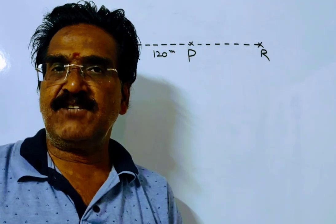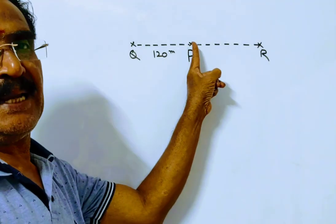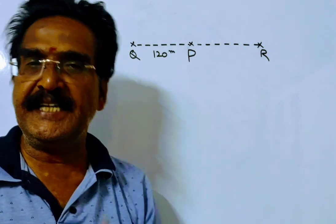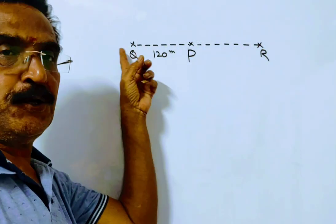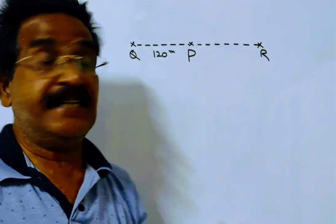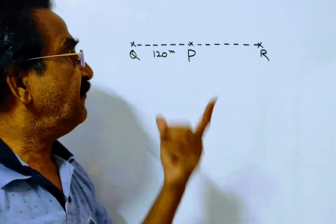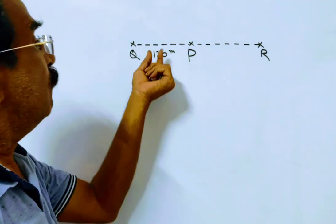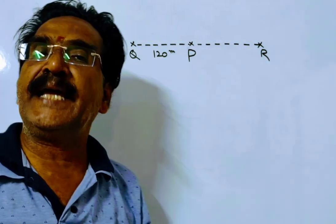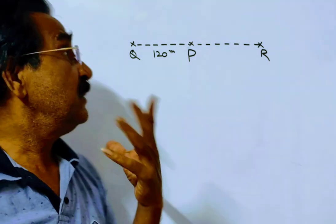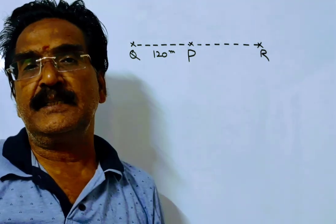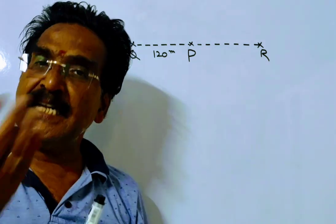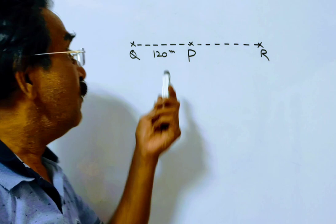Here, a swimmer swims from point P to point R upstream for 6 minutes, and from R to Q another 6 minutes downstream. While swimming downstream, he swims 120 meters more than in upstream. So the difference between the distance traveled in downstream and in upstream is 120 meters.